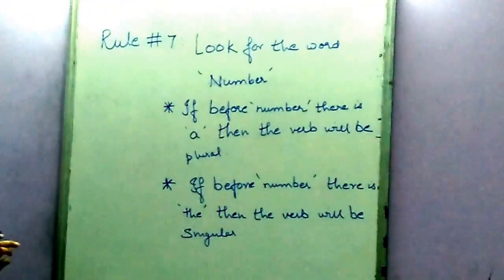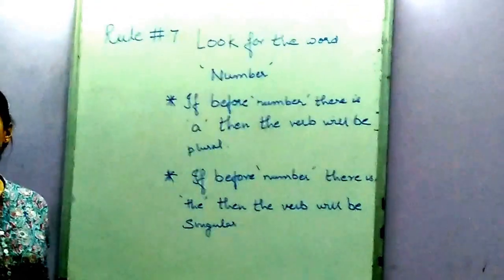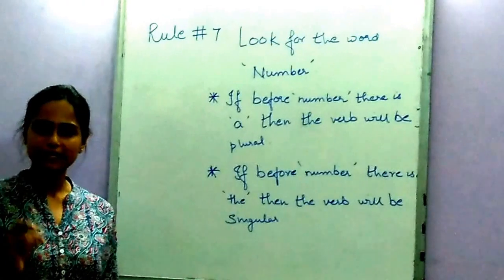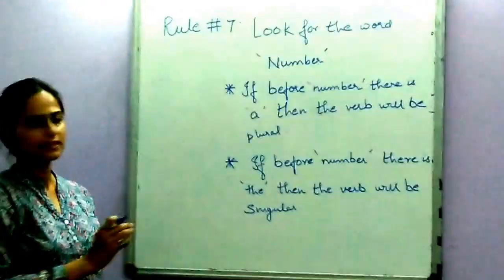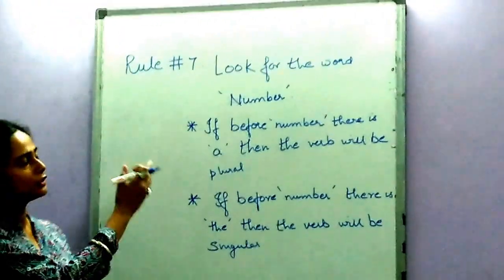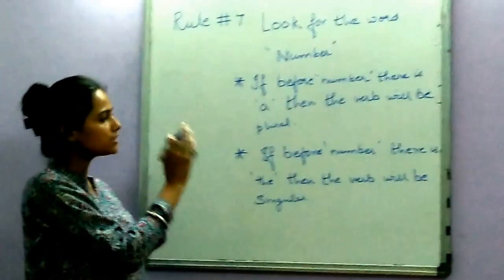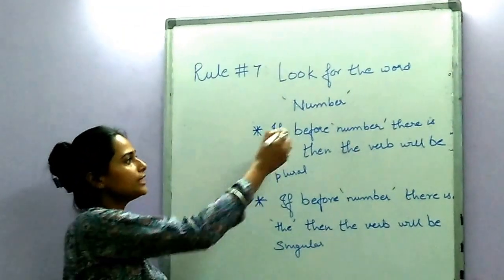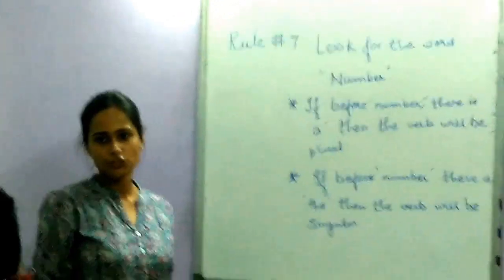This is a quick tip or trick that you can apply whenever you need to decide. You can apply to the subject-verb agreement. But in these sentences, you have to only see that if a number or the number, then your verb will decide.